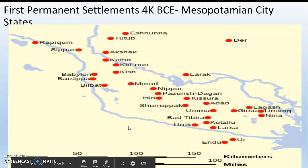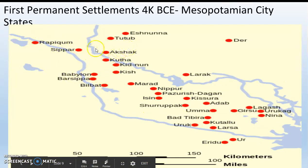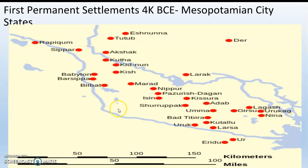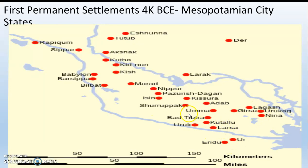This map shows many of the city-states in Mesopotamia — Ur, Tudub, Akshak, and others with all kinds of names. Notice they're all along the two rivers and all pretty close to each other. All of these are farming communities — permanent cities — and each dot is a separate city-state, a separate country, but they're all Mesopotamian and basically the same people.